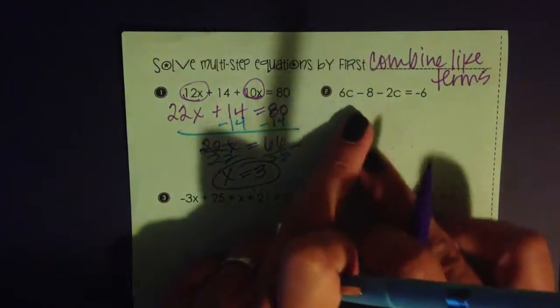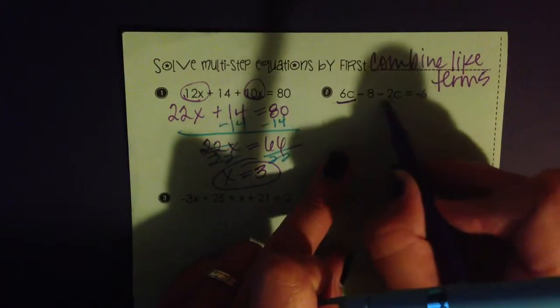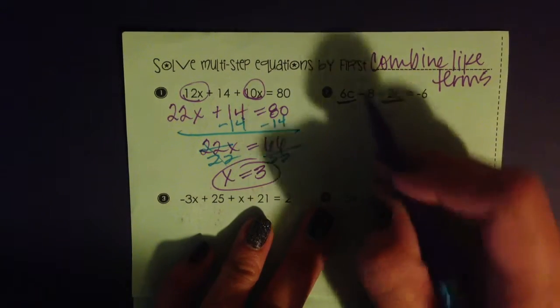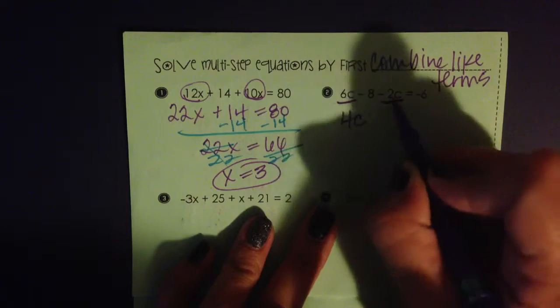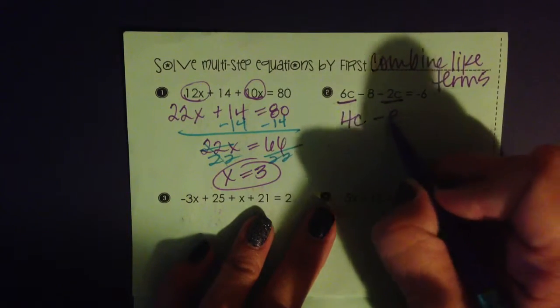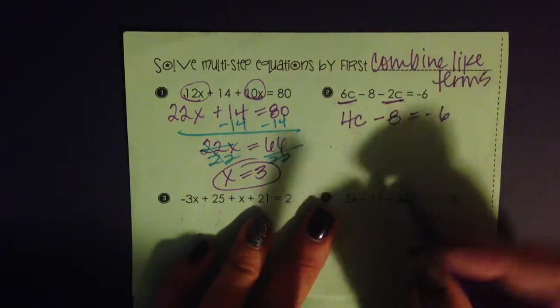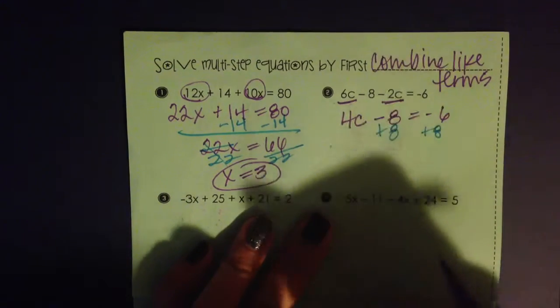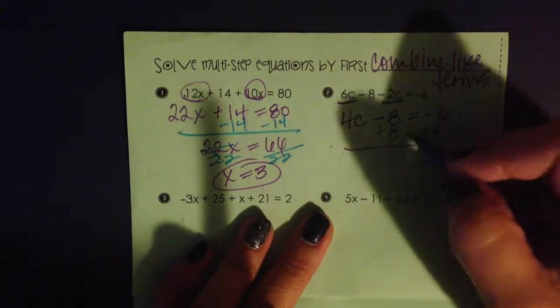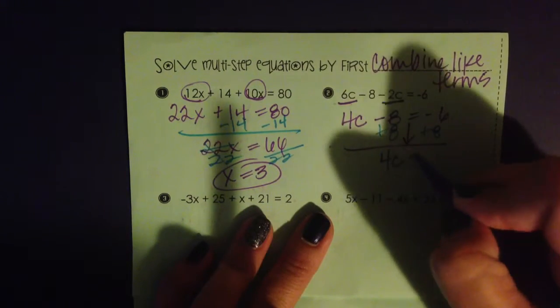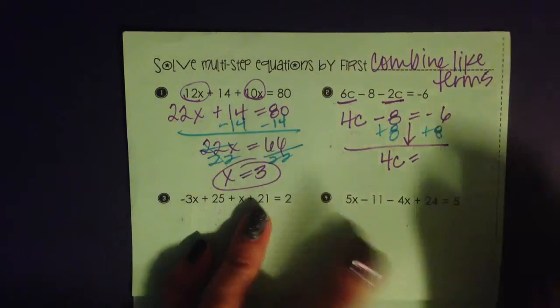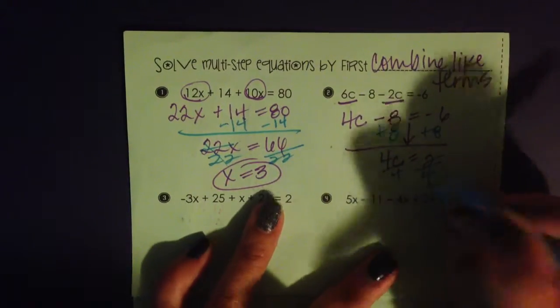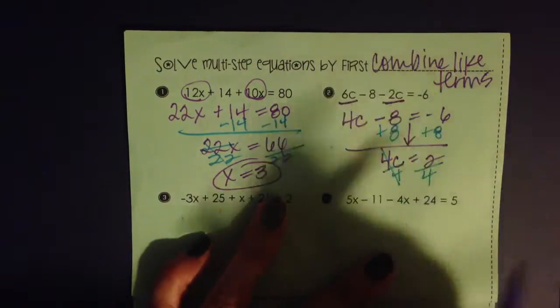When we look at number 2, the like terms that I have are 6c and 2c, but it's a negative 2c that I have to put together with it because it's being subtracted. So 6c minus 2c is 4c. I have minus 8. That's equal to negative 6. I'm going to add 8 to both sides, keeping that equation in balance. 4c is equal to 2. When I divide by 4, I wind up with the fractional part 1 half.